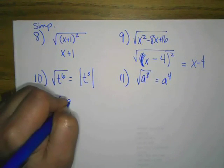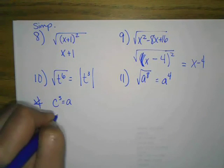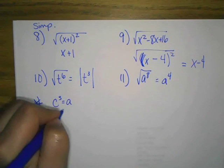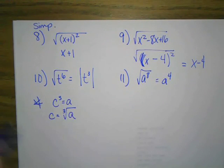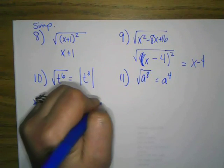C cubed equals a. What does C equal? How do you undo both sides? Well, you cube root both sides. And that does take care of undoing the cubing.